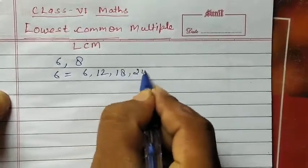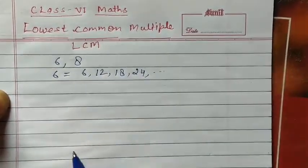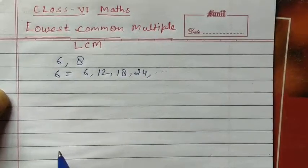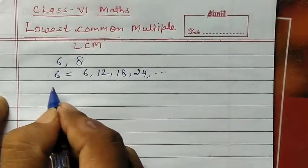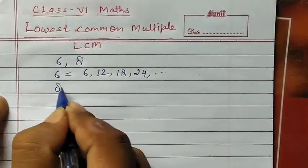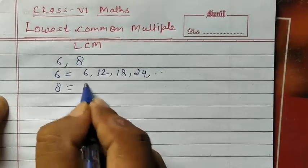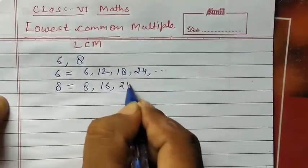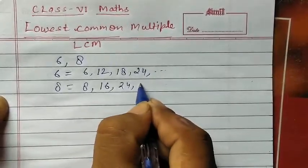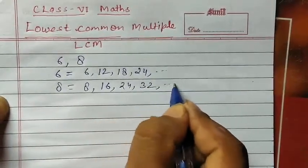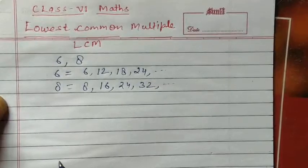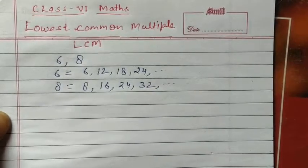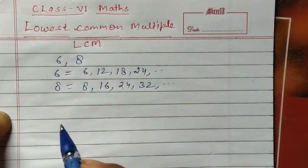18, 24. This is 6 ka multiple. 6 ka multiple means 6 ka table. And also multiples of 8. 8 ka multiple, 8 ka table: 8, 16, 24, 32. Now we can see the lowest common multiple.